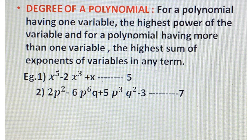Let us understand with examples. Example 1: x⁵ − 2x³ + x. This polynomial has only one variable, x. In the first term, power of x is 5; in the second term, power of x is 3; in the third term, power of x is 1. The highest power of x is 5, so the degree of this polynomial is 5.